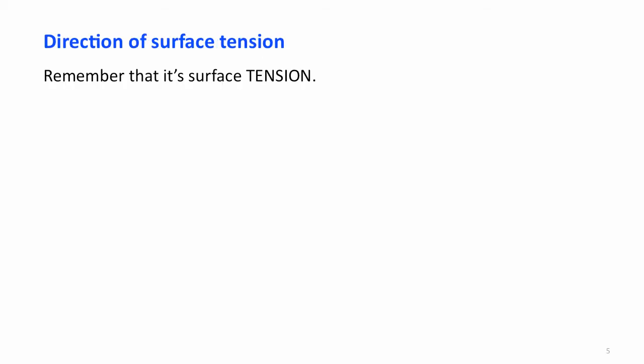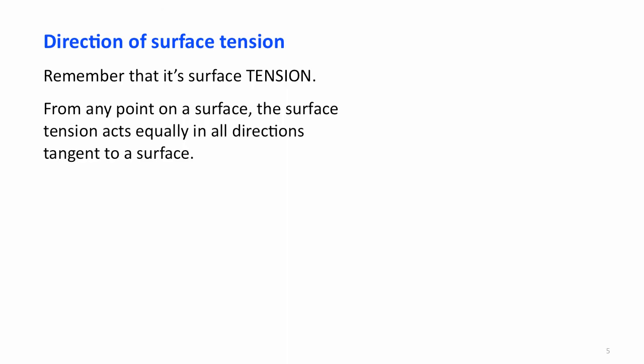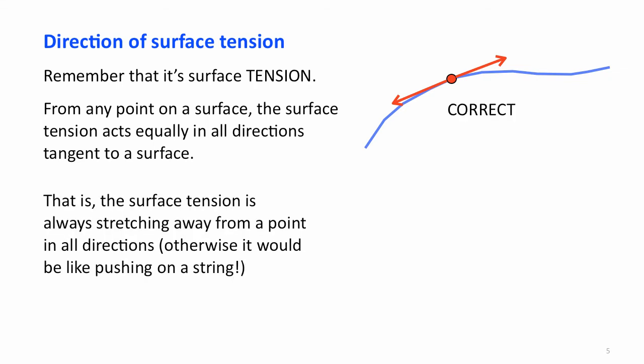The direction over which surface tension acts becomes an important part of most problems. Keep in mind it's surface tension — it acts equally in all directions, tangent to a surface. If we have some surface and choose a point, we can draw tangent arrows outward from that point. It's always stretching away from the point; otherwise we're pushing on a string. Surface tension never acts inwards towards a point.